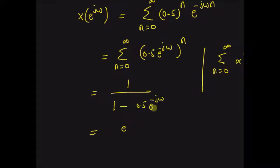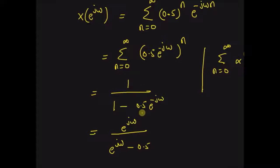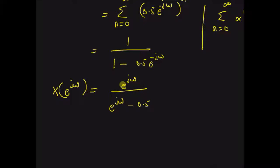This can also be written as e to the power j omega divided by (e to the power j omega minus 0.5), by multiplying both numerator and denominator by e to the power j omega. Clearly the DTFT is a complex-valued function, whereas the sequence x of n is a real sequence.